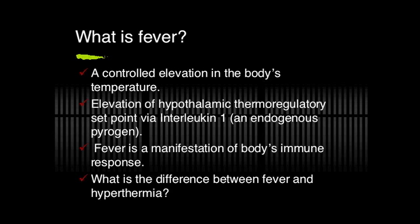How would you define fever not just in terms of its numerical value but what exactly happens? Fever is a controlled elevation in the body's temperature — controlled, as opposed to hyperthermia, which is an uncontrolled elevation. The thermostat in the body, the hypothalamic thermoregulatory set point, is elevated when the body encounters an infection, whether viral or bacterial. There's an immune response that releases things like interleukin-1, and the pyrogen resets the thermostat to a higher set point, causing fever.